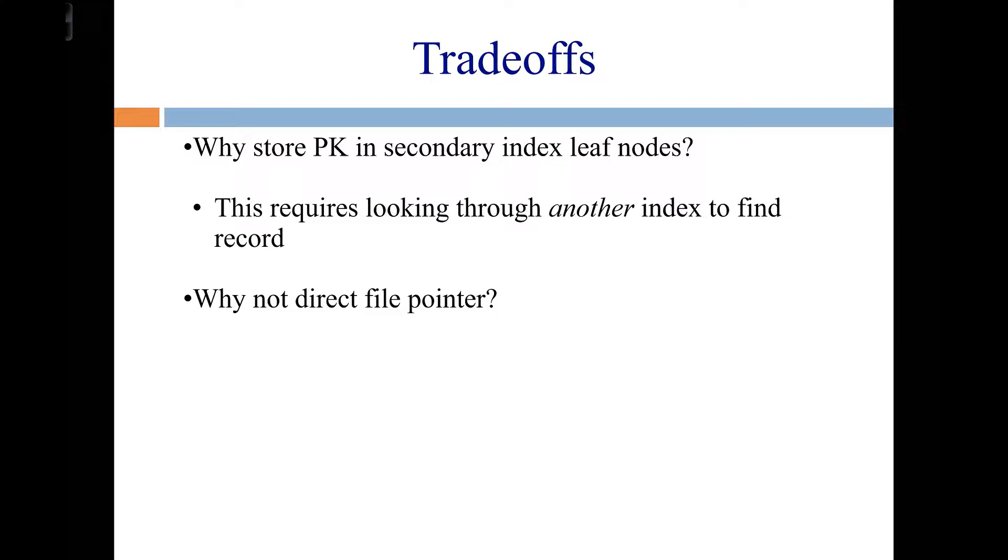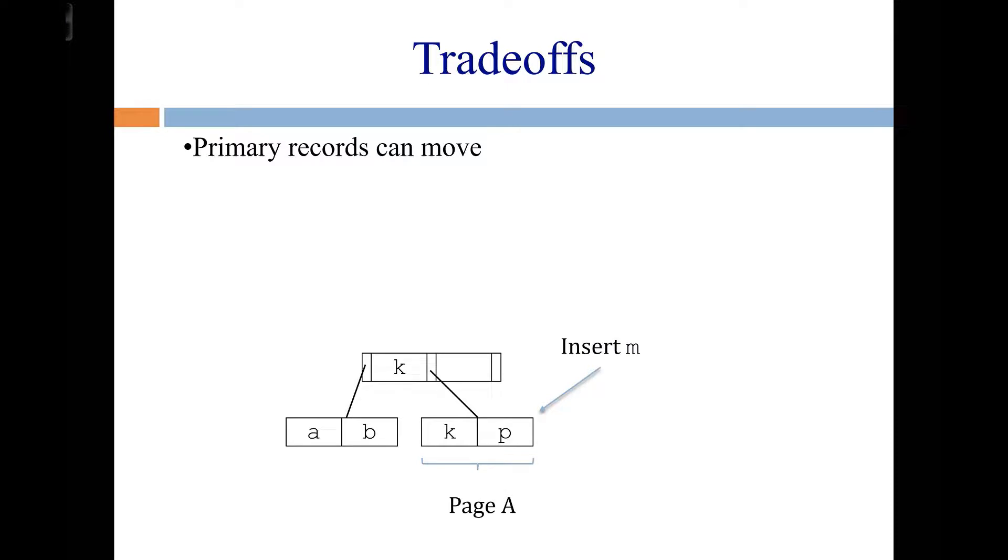And that raises a question. Why do we do it this way? Why do we store the primary key in the secondary leaf nodes instead of just storing a direct pointer into the file? Doing it the way we do, this requires an additional lookup through another index. We have to search the secondary index, then we have to search the primary index. So why not just store a direct file pointer? And the reason is that records in the primary index can move. So as we're adding or removing things to the table, we sometimes have to rearrange where we store things in order to maintain this perfect balance property in a B-plus tree.